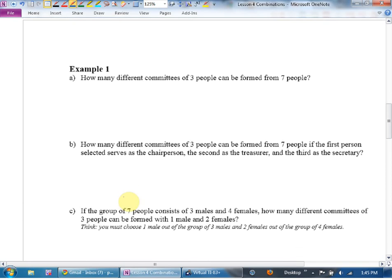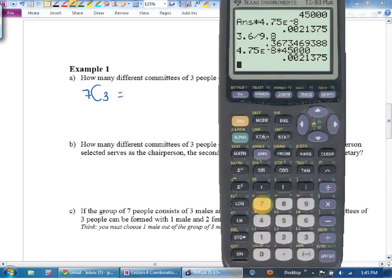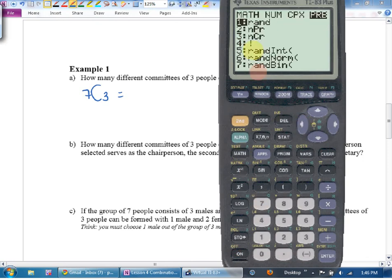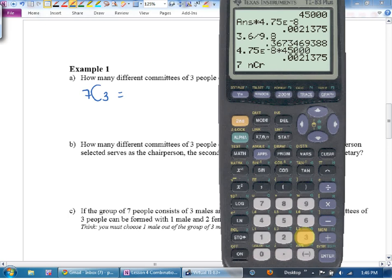So, how many different committees of three people can be formed from seven people? If we're just forming a committee, have they mentioned anything here in this sentence like it might matter when you get picked? This is going to be seven choose three. You are going to have to go to your calculator. Seven, math, left arrow. Oh, there's the choose. Option number three. Seven choose three is 35.